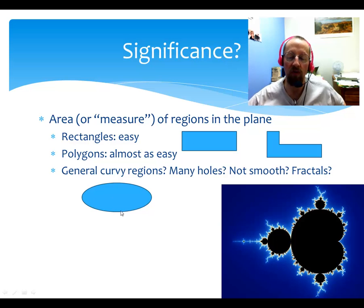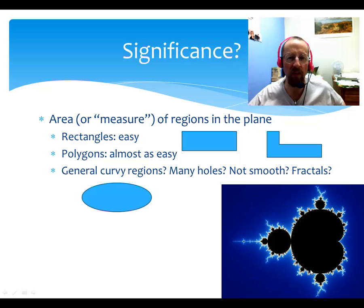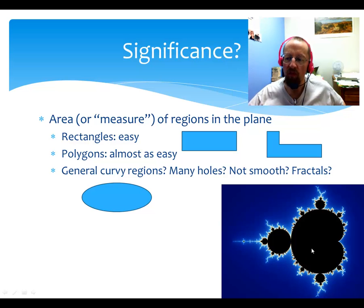But what about a fractal region? How do you know that process — even if you have the calculus notion of area — is even going to work and make sense? People discovered, out of the same kind of research that got Cantor interested, that that can be a very, very subtle thing.